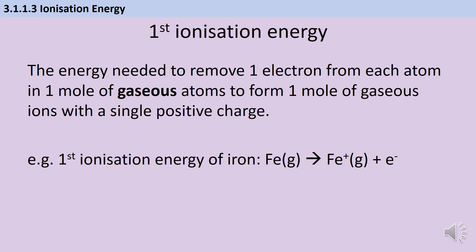There are two things to be aware of. One is that it's always a gas — it doesn't matter what the element is. Iron at room temperature is a solid, but the definition is always as a gas, so it's really important that you put in state symbols to show it's a gas. The other thing is that the first ionization energy is always about the removal of the first electron — it doesn't matter that iron typically makes 2+ or 3+ ions.